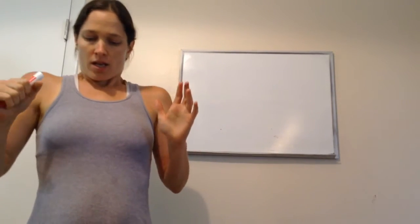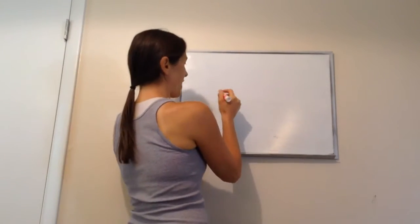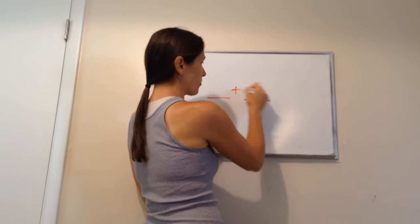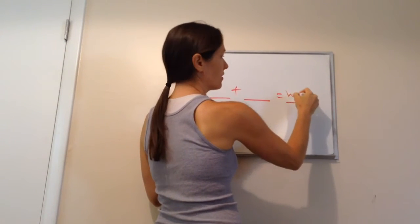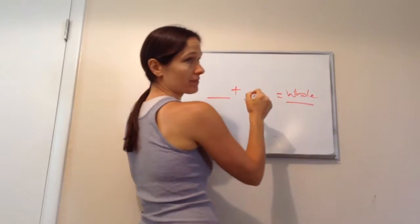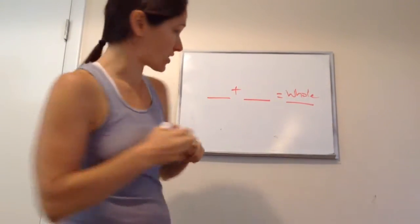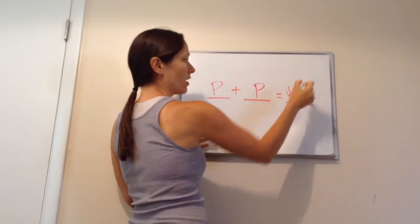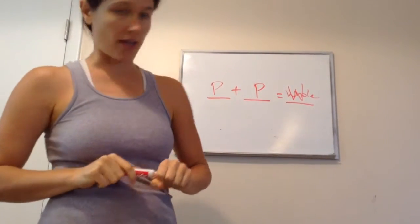Now, if we have a part plus another part, it equals the whole, right? That's what you're going to be learning about today. So, a part plus another part equals a whole, just a W right there, like that.